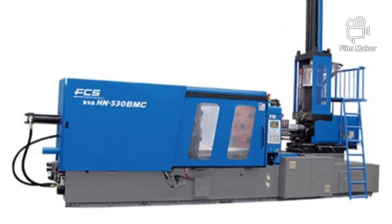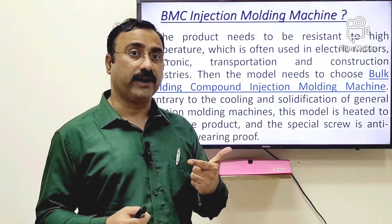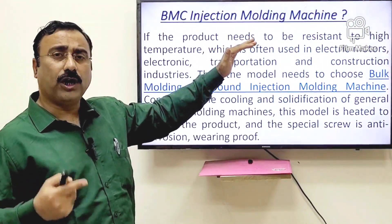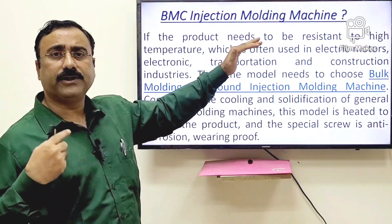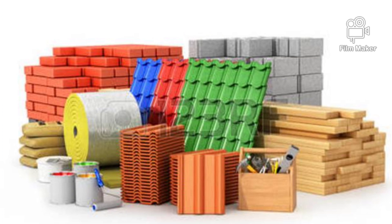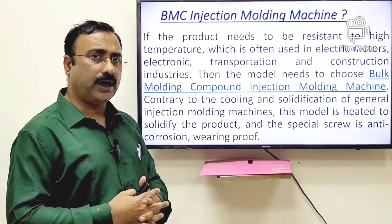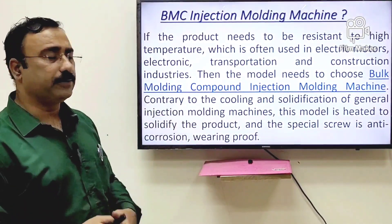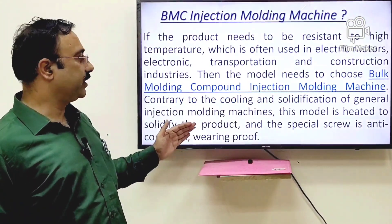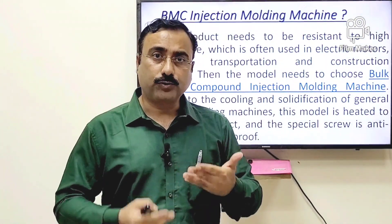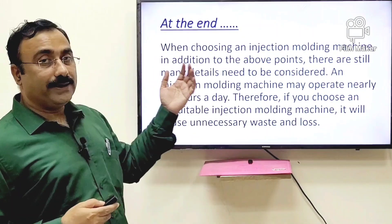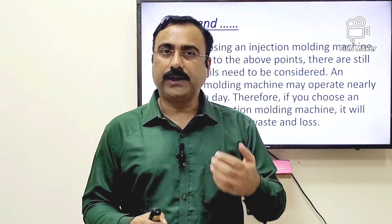Another type is the BMC injection molding machine. A BMC machine is used where the product requires high temperature resistance and is kept in an open environment — for example, car bumpers, electric motors, or construction materials kept outside in ambient temperature. BMC stands for Bulk Molding Compound. These machines have a special mold facility where, after cooling to a certain temperature, the material is then heated to achieve a stable shape.